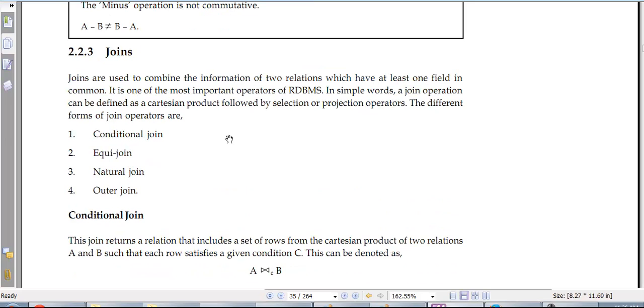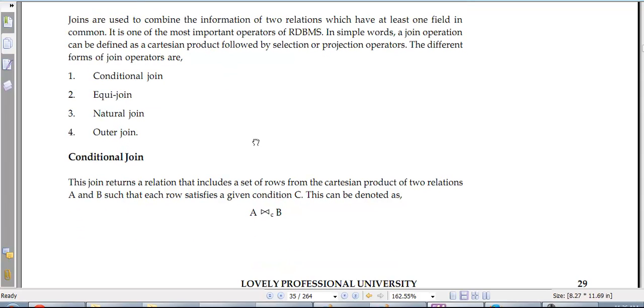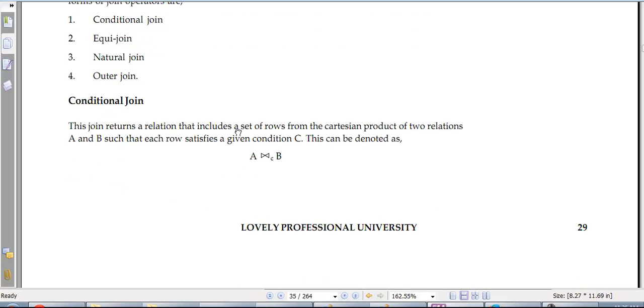Then we have got the joins. These are again very important. So joins are used to combine the information from two relations having at least one field in common. In most of them I devise several join operations: refinement is partition followed by selection and projection operation. Refinement is conditional join and equi-join.